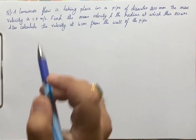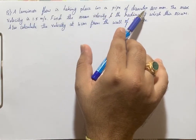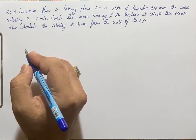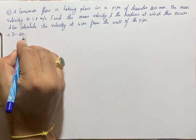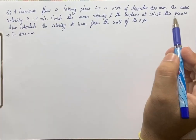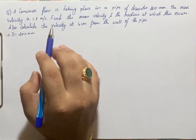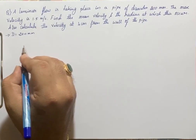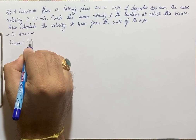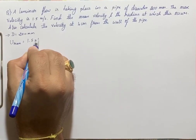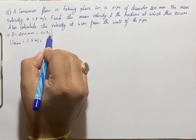The question is as follows: a laminar flow is taking place in a pipe of diameter 200 mm, that is D = 200 mm, or 0.2 meter. The maximum velocity is given as u_max = 1.5 meter per second.